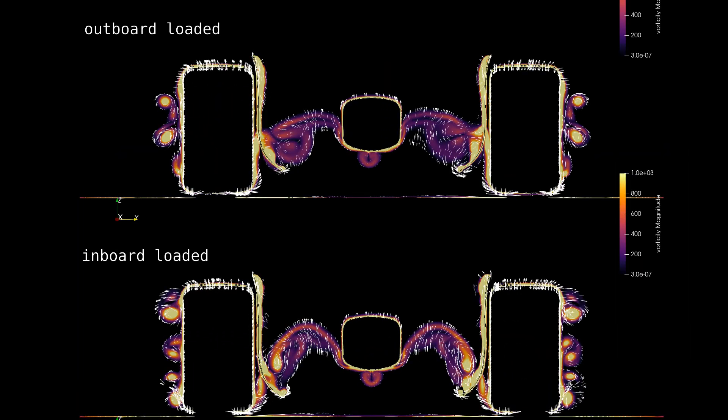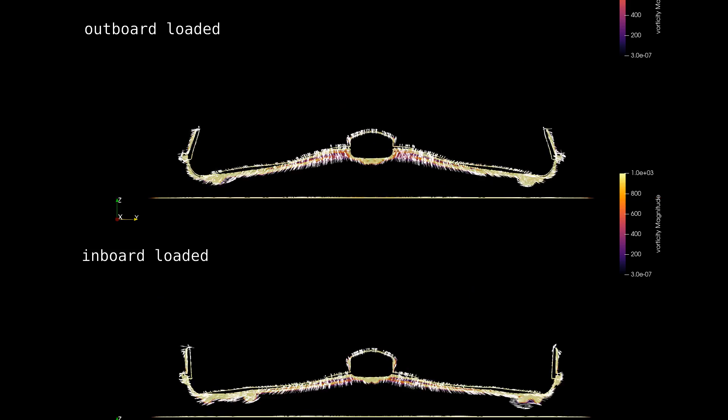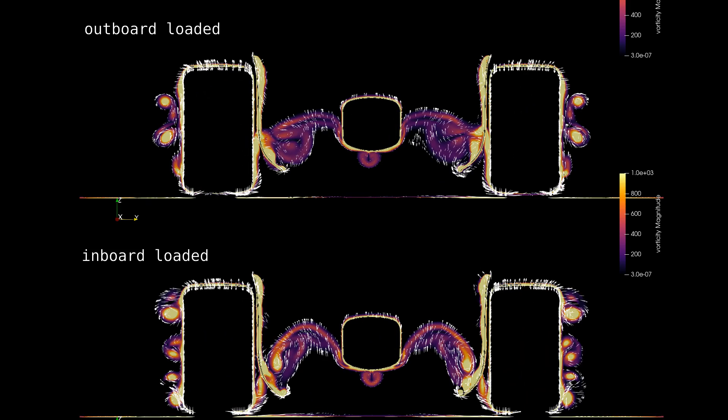You can see in these animations that the central loading of the wing is the most important in creating a significant amount of upwash. Now because I have a loaded and unloaded outboard section, we can see there is more rotation of the flow about the x-axis comparing the two.